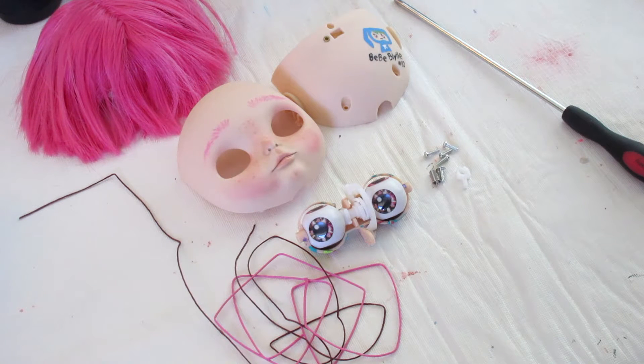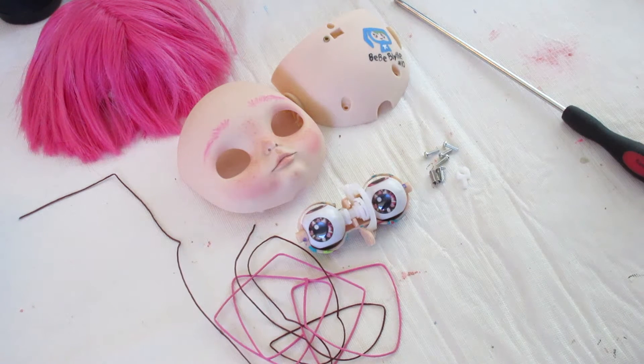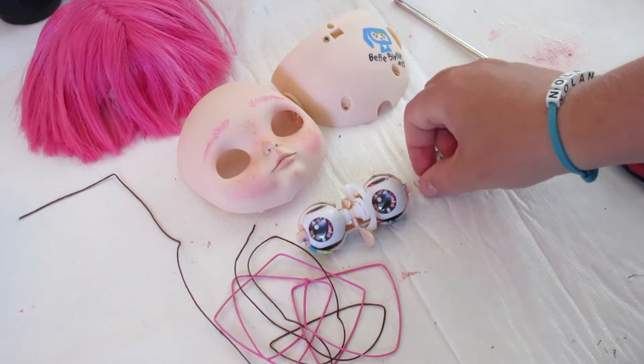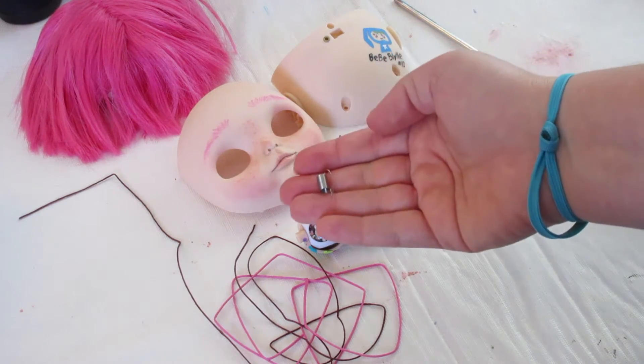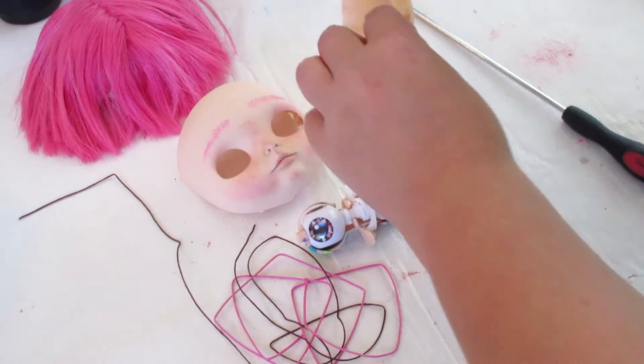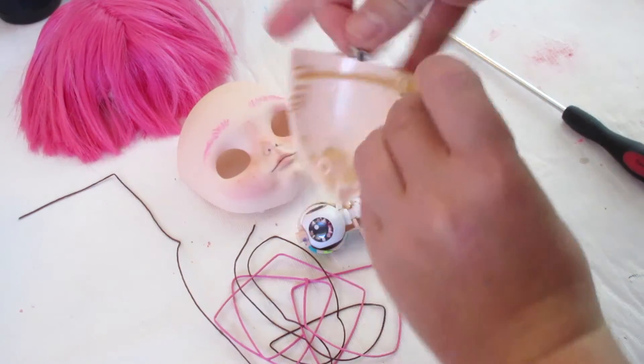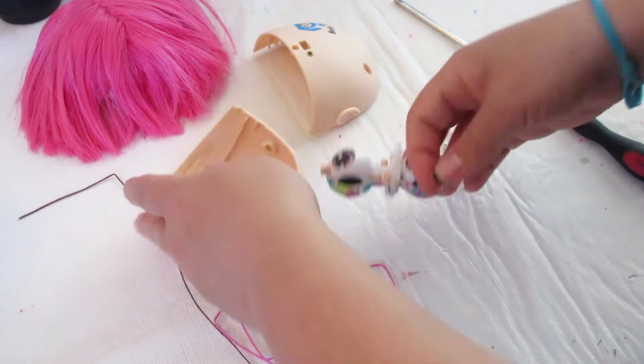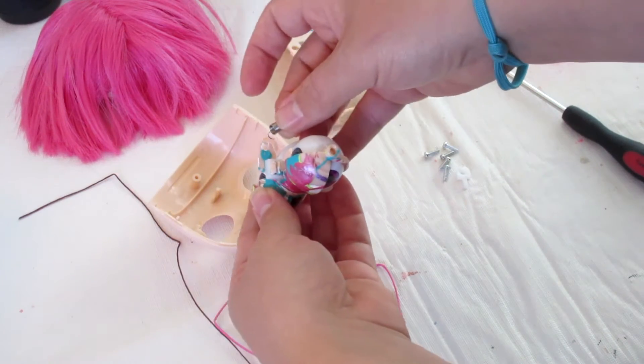When you take your Blythe doll apart, you'll notice that there's a tiny spring that holds the back plate to the front plate, which is one of the parts on the eye mechanism. You take this spring off when you open the doll.